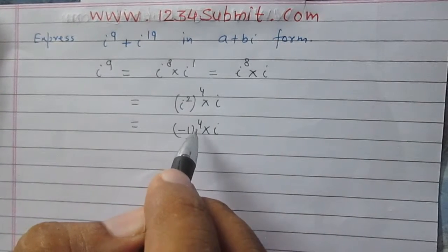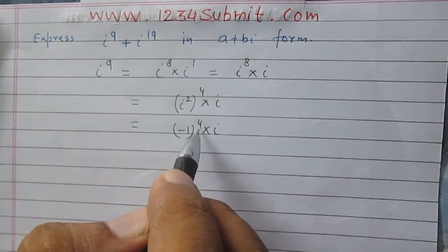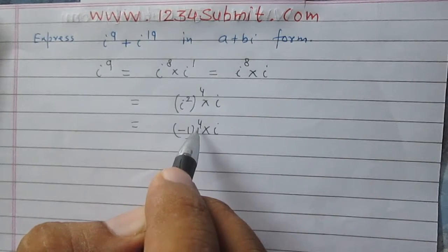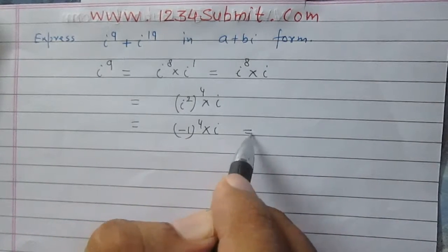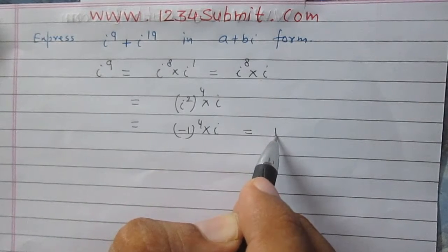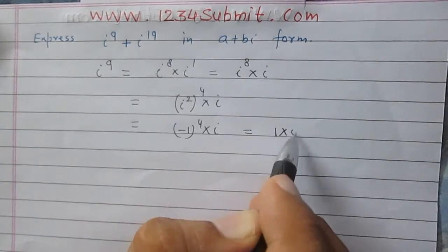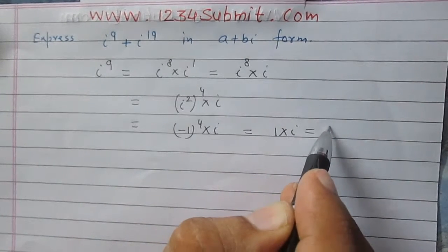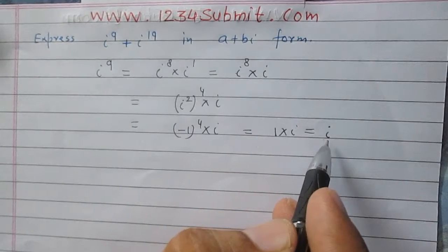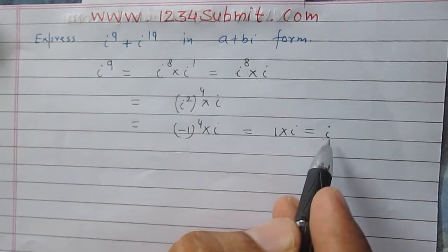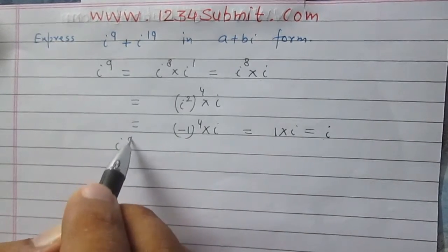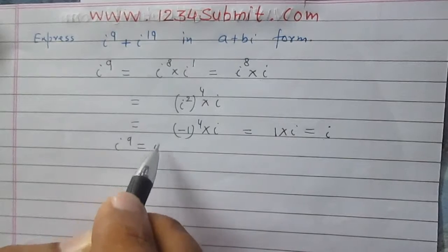Now 4 is an even number, so minus 1 raised to an even power is plus 1. So it is plus 1 into iota, and finally we get iota. So iota raised to power 9 is iota.